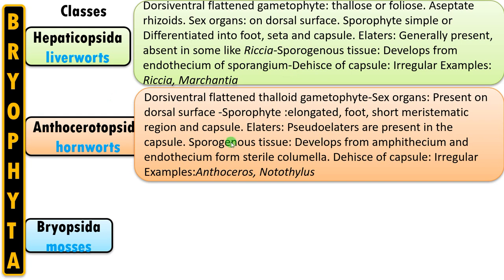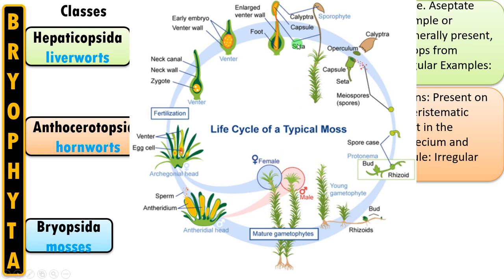Now let us see the most advanced group among bryophytes — the Bryopsida or the mosses. This is the life cycle of a typical moss. There is a male gametophytic plant and a female gametophytic plant — leafy, well-developed with well-developed rhizoids for attachment, anchorage, and absorption. Antheridia and archegonia are the sex organs. Antheridia form the male gamete sperm whereas archegonia form the female gamete egg; these undergo fertilization forming the zygote. It develops into a sporophyte — an elongated structure with foot, an elongated seta, and finally a capsule. The sporophyte is totally dependent on the gametophyte, a common characteristic of bryophytes. Spores are released upon maturity.